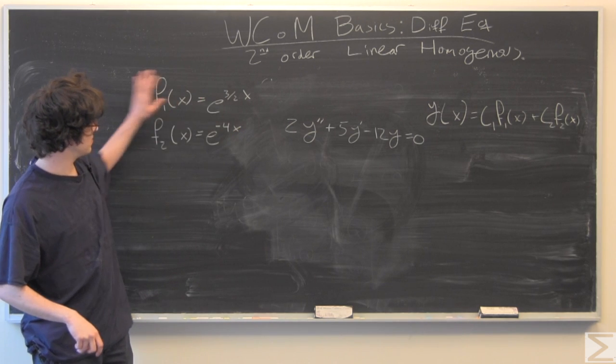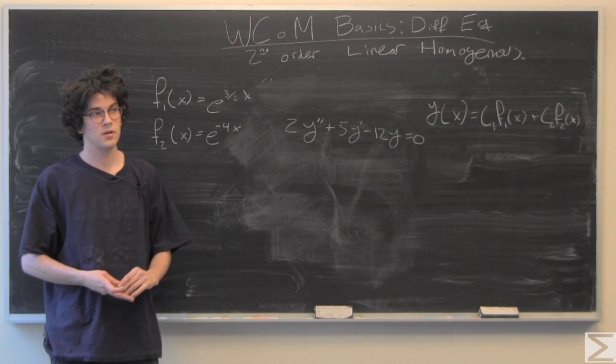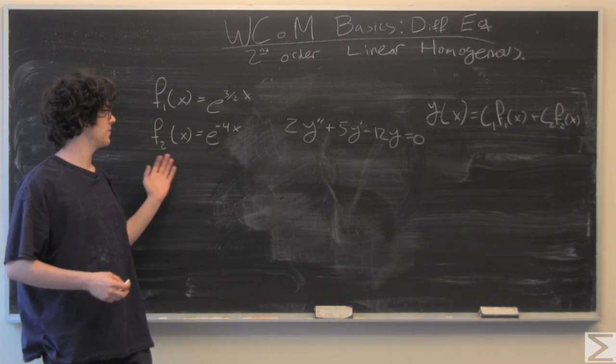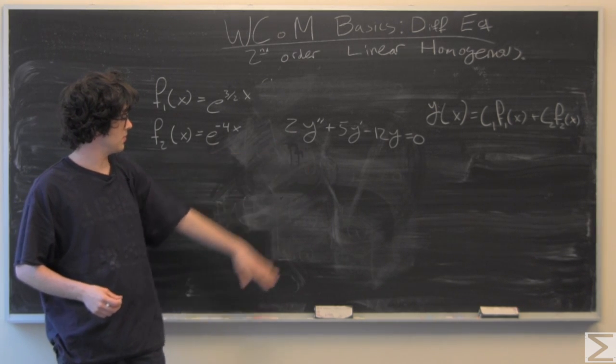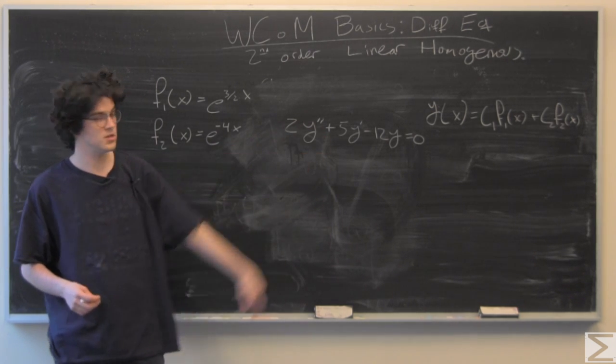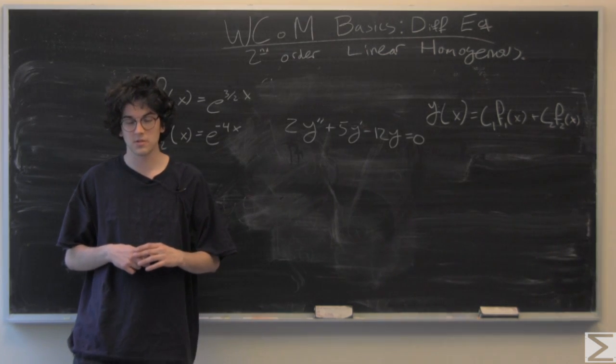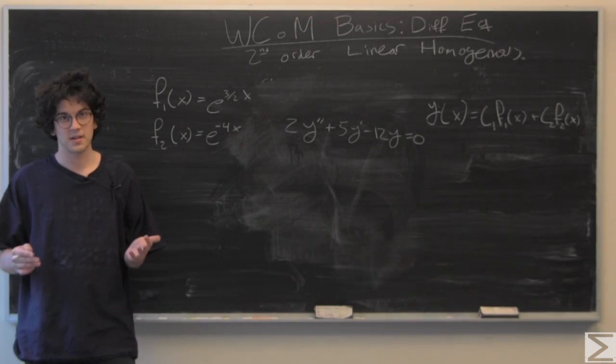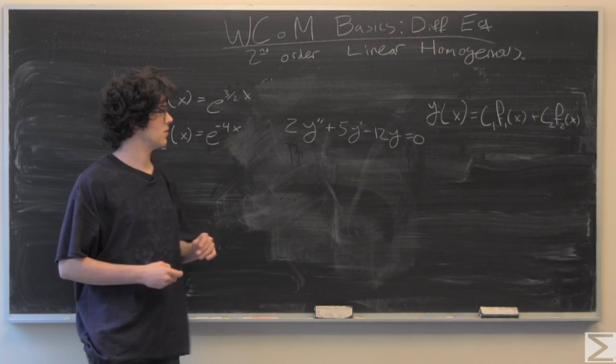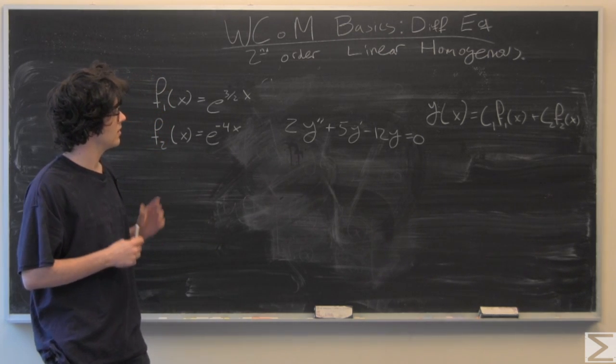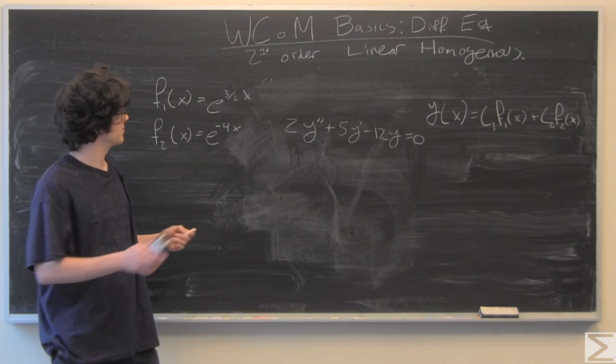Going one at a time, just working with F1, plugging in its second derivative, its first derivative, and F1. Then plugging in for F2. Our solution to this is going to be a linear combination. Usually you're just going to find C1 and C2 with some initial conditions. Pause the video now, work that out, and then we're going to get right into how to solve our linear second order homogeneous differential equations.